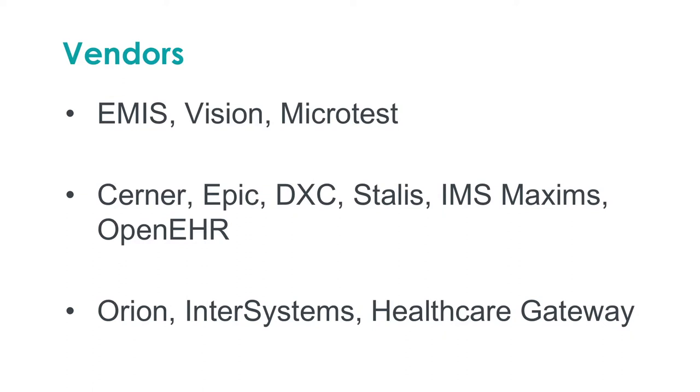The list of engaged vendors for FHIR curation includes, for primary care: EMIS, Vision, and Microtest. For secondary care: Cerner, Epic, DXC, Stalis, IMS Maxim, and Open HR. From middlewares: Orion Health, InterSystems, and Healthcare Gateway.